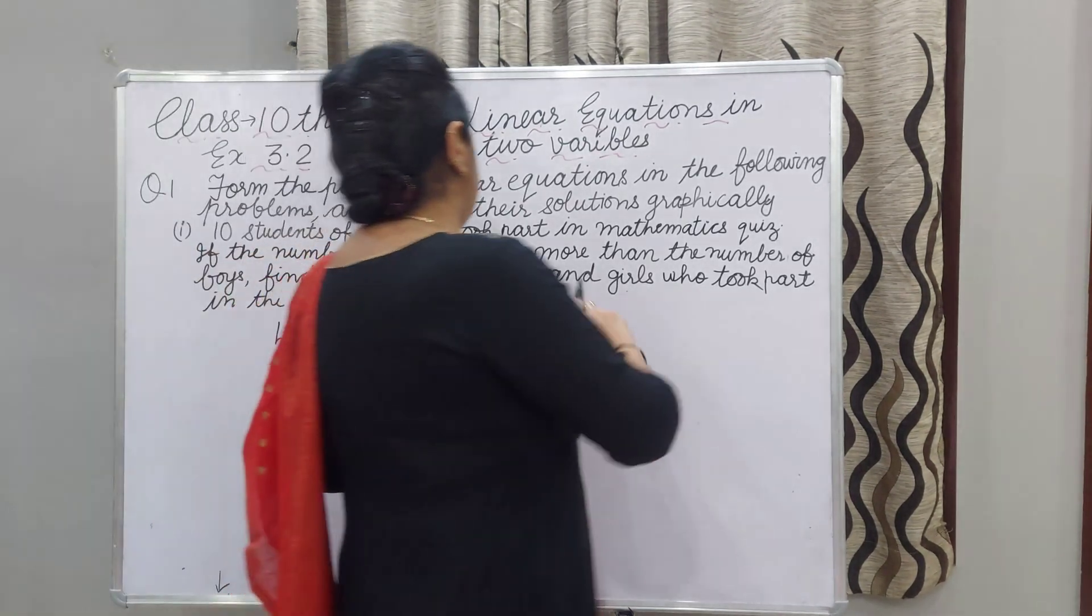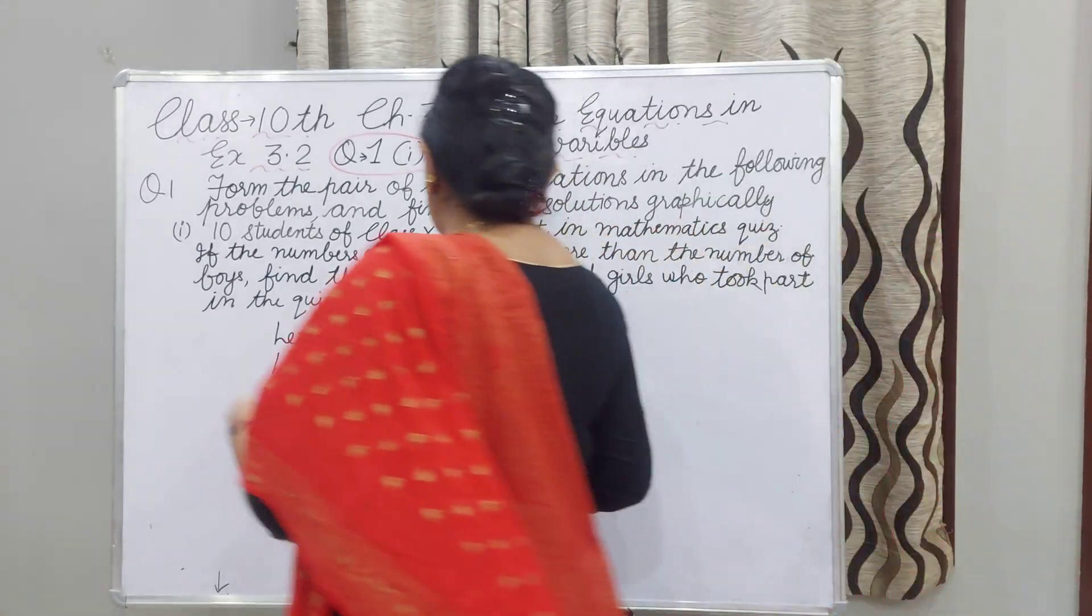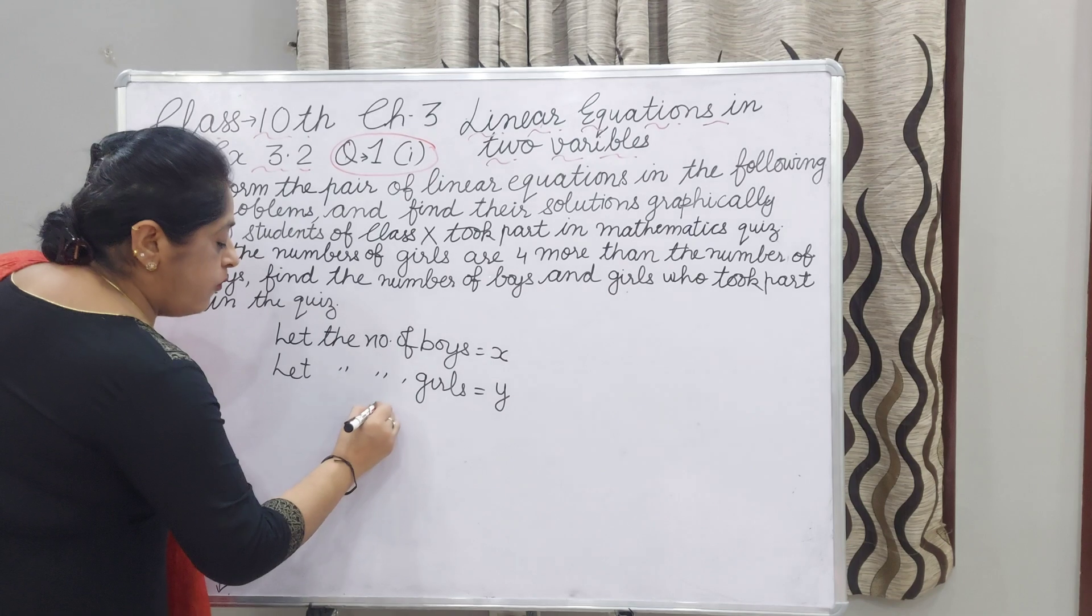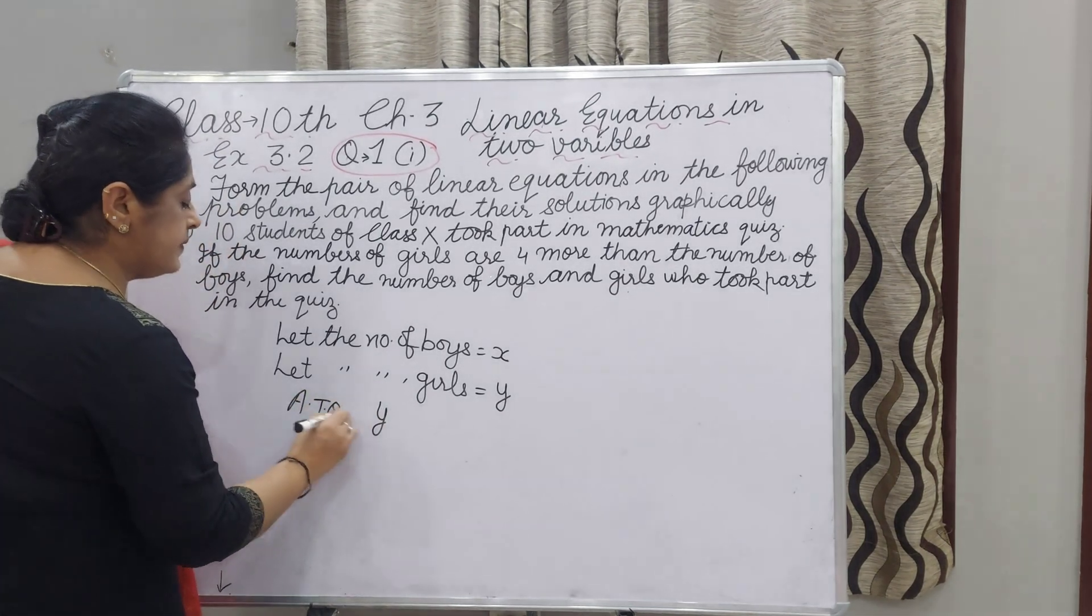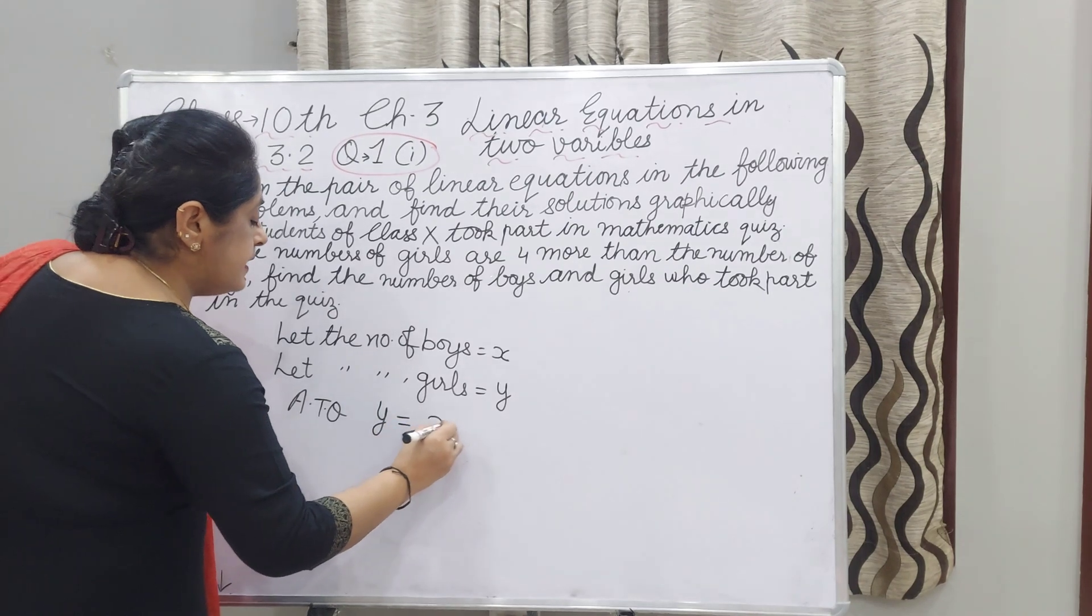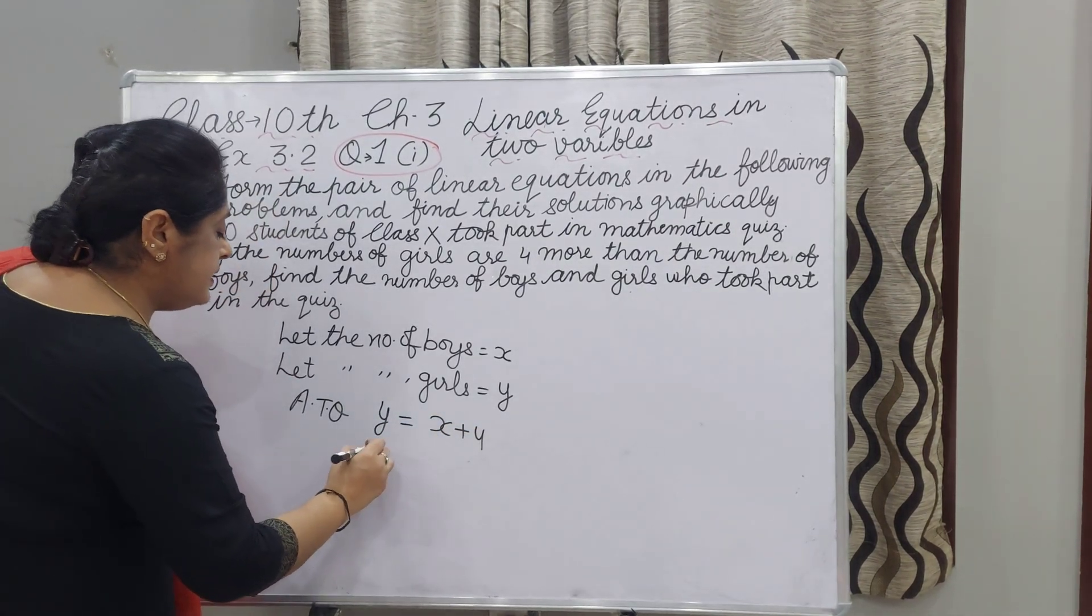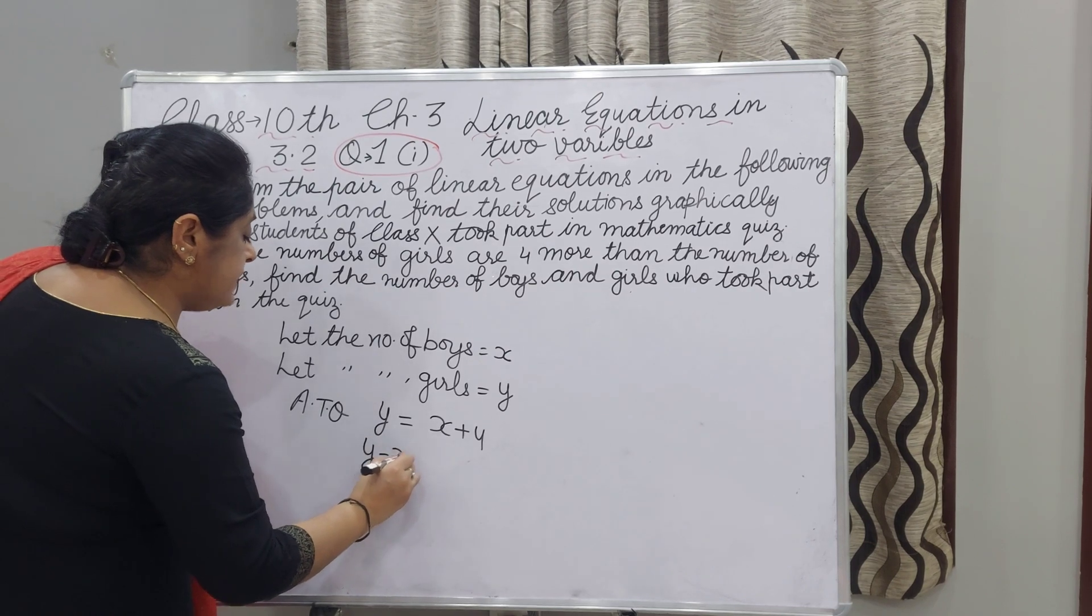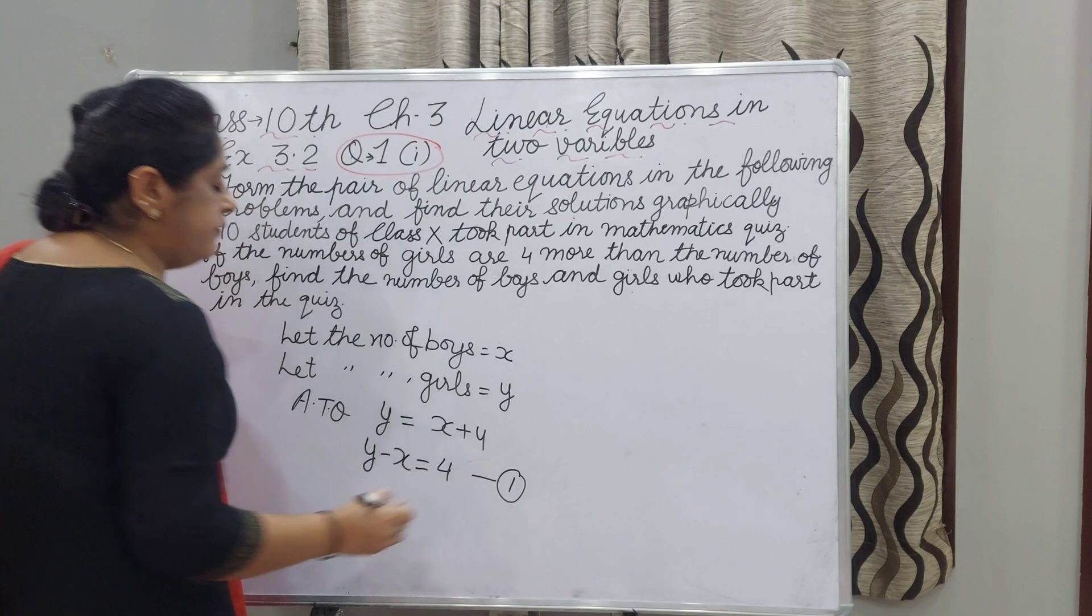Now, according to the question, girls are 4 more than boys. This means Y is X plus 4, or Y minus X equals 4. This is equation 1.